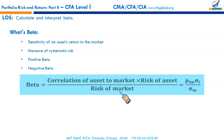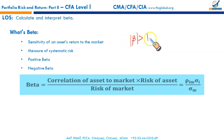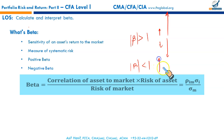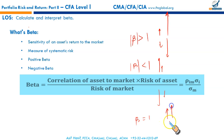Some important points: if beta is greater than 1 in absolute value, the asset is more volatile than changes in the market — it will react more than the market. If beta is less than 1, the asset is less volatile and less reactive than market changes. When beta is exactly equal to 1, the asset moves up and down in the same way as the market — they respond identically.